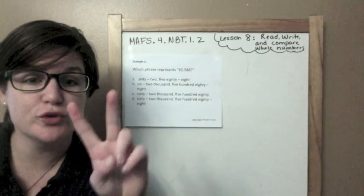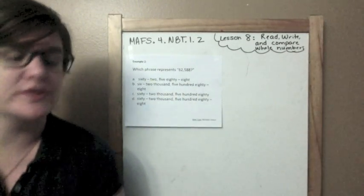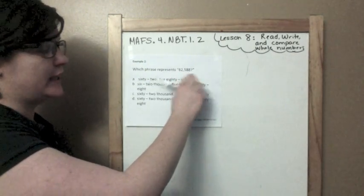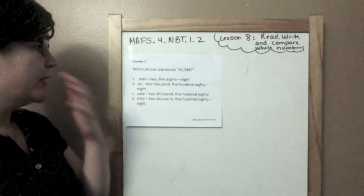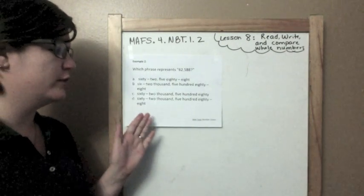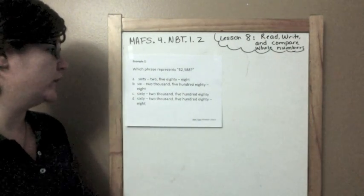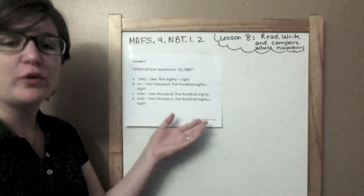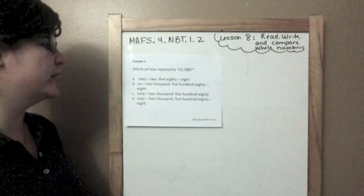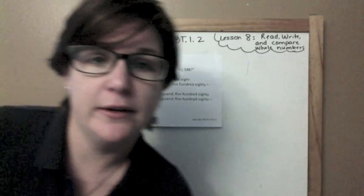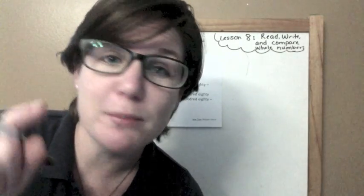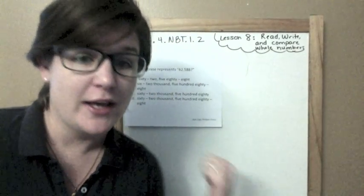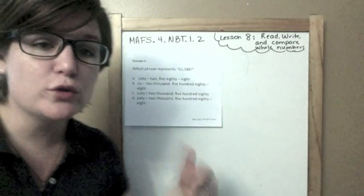Okay, we're on example two. It says, which phrase represents 62,588? Okay, and it's written in word form. It's a multiple choice answer, so there's only one correct answer. It might be more than one, but we know, I'm letting you know for this one, it's only going to be one answer.